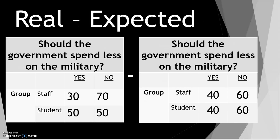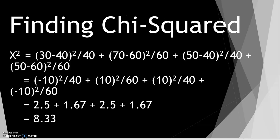Then you subtract the cells of the expected table from those of the original table. After subtracting, you square the differences and divide the squared differences in each cell by the count in the expected table. Finally, find the sum of all these values to find chi-squared.